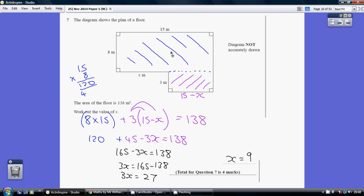The area of the blue rectangle is just 8 times 15, 120, and the area of this rectangle here, we know this dimension here is 3. You've got to appreciate that this length here is 15 take away x, because it's this whole length of 15 less this length of x.